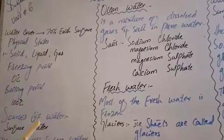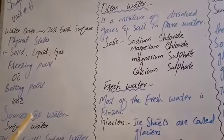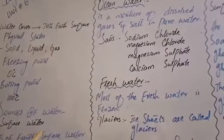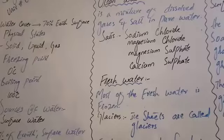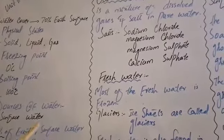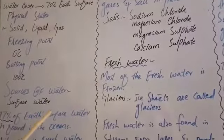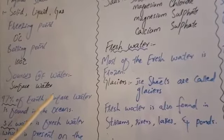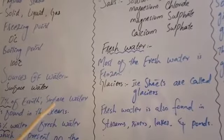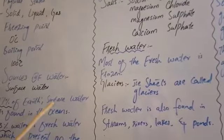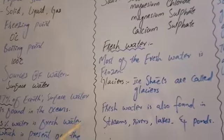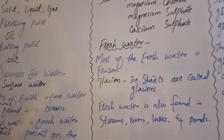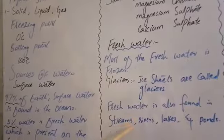In some countries like Saudi Arabia and Kuwait, salt is removed from ocean water using different techniques to make it drinkable. Now, coming to fresh water — most of the fresh water is frozen. Fresh water is found in the mountains in the form of glaciers, where snow accumulates year after year to form ice sheets.